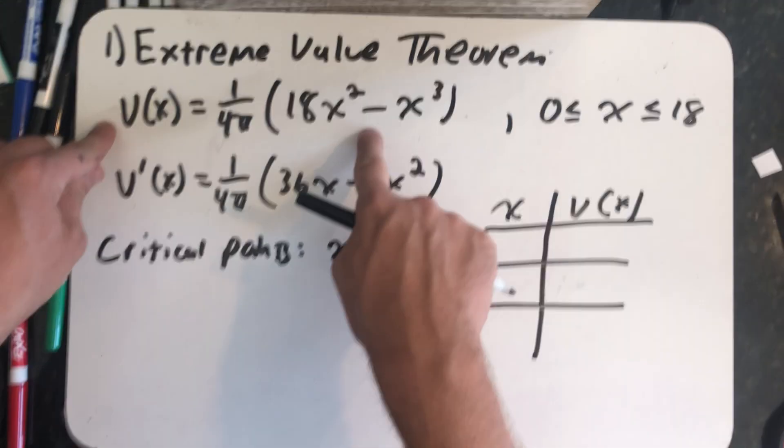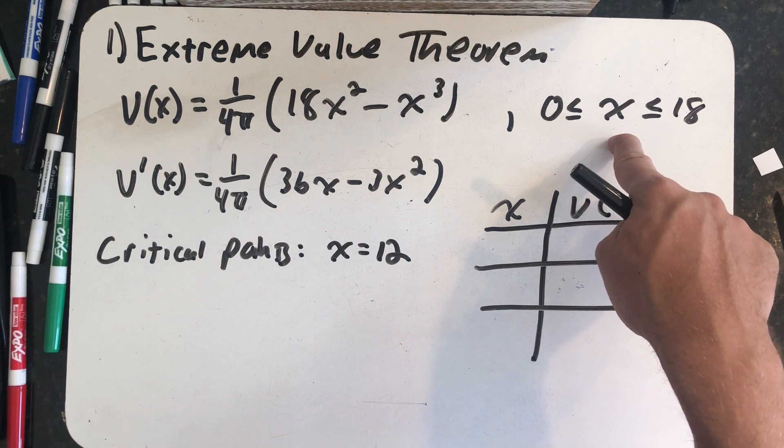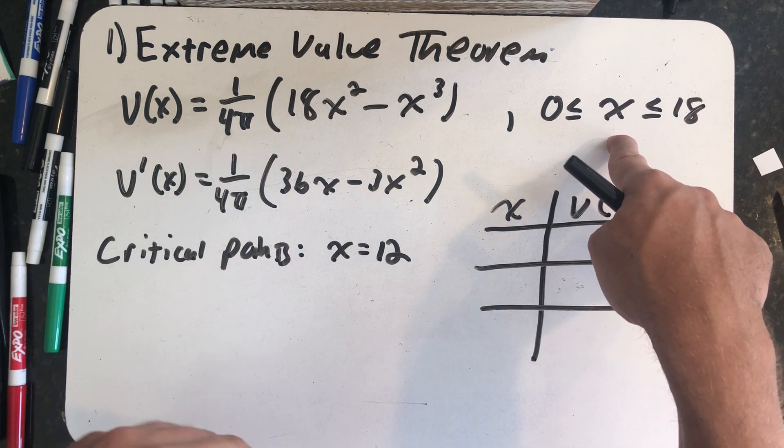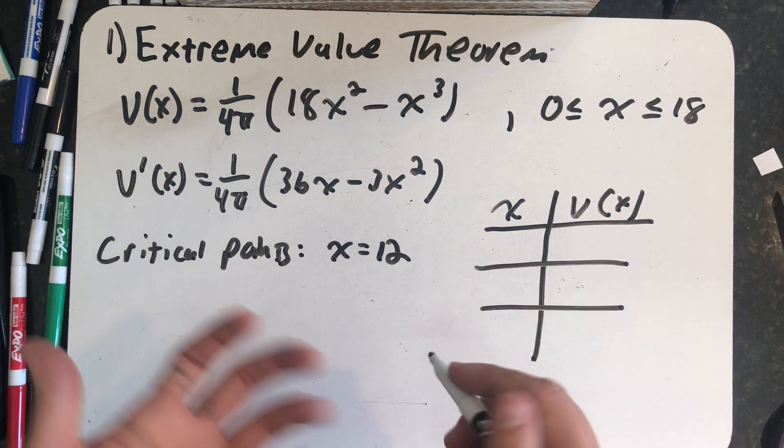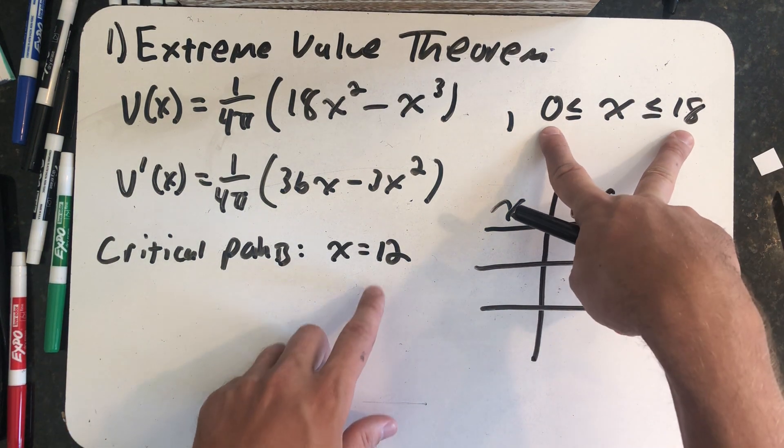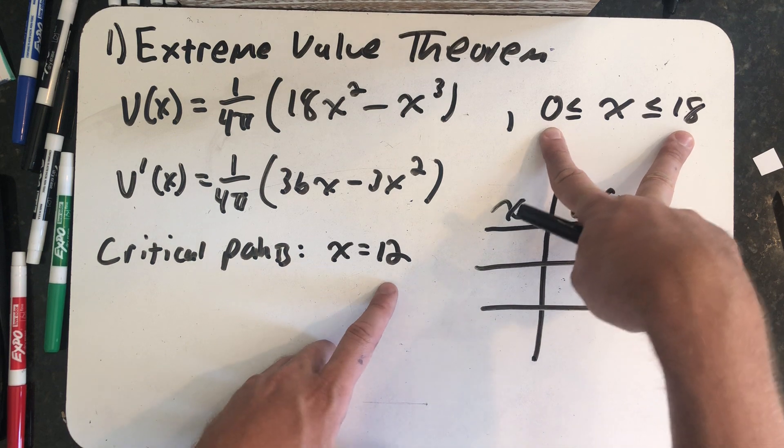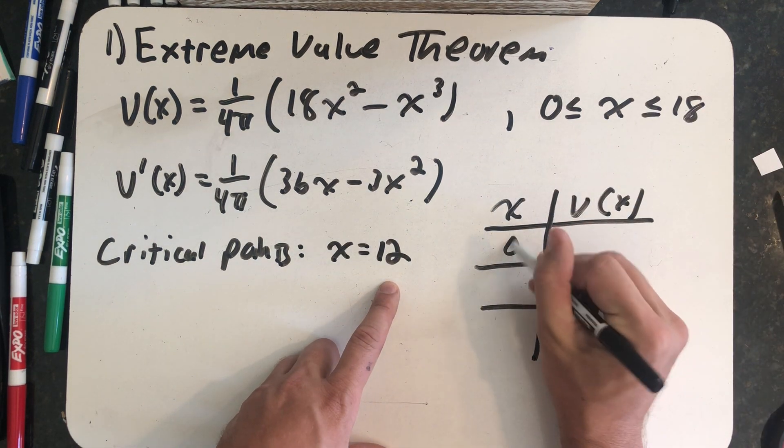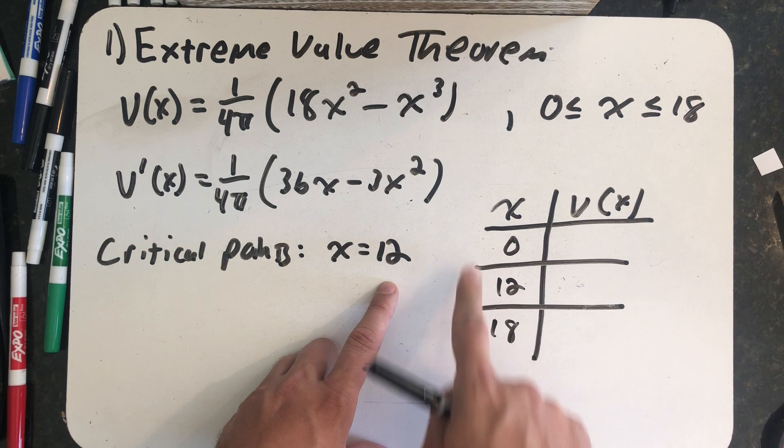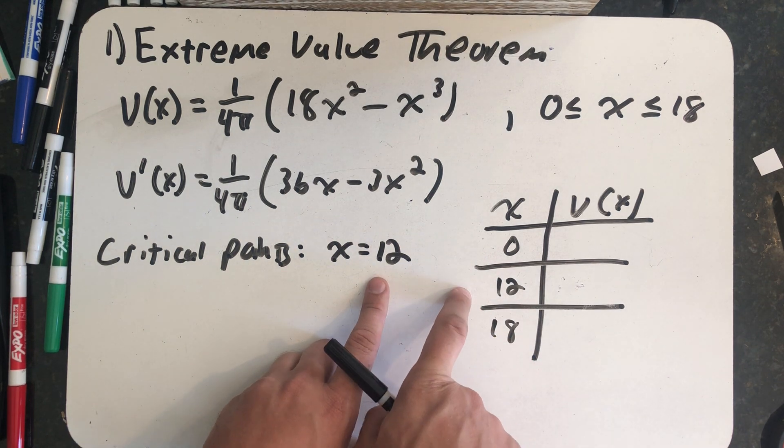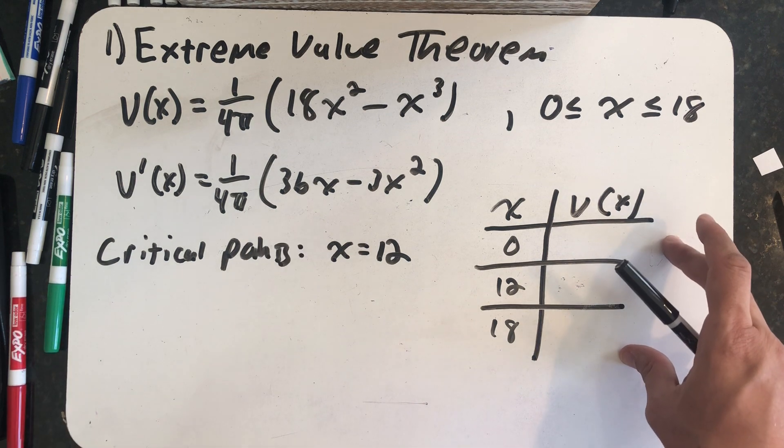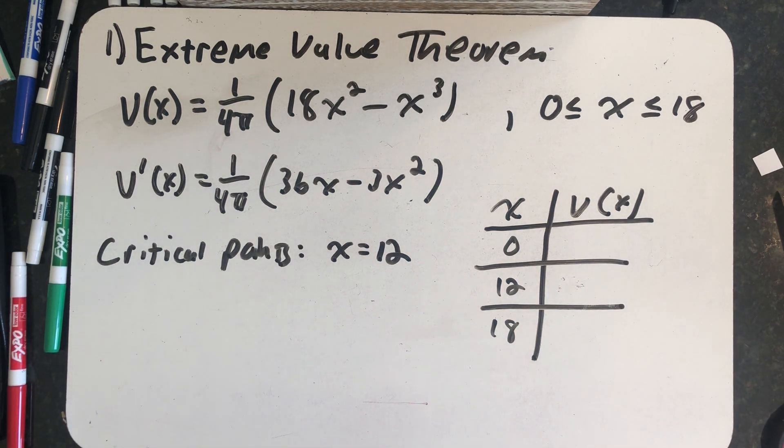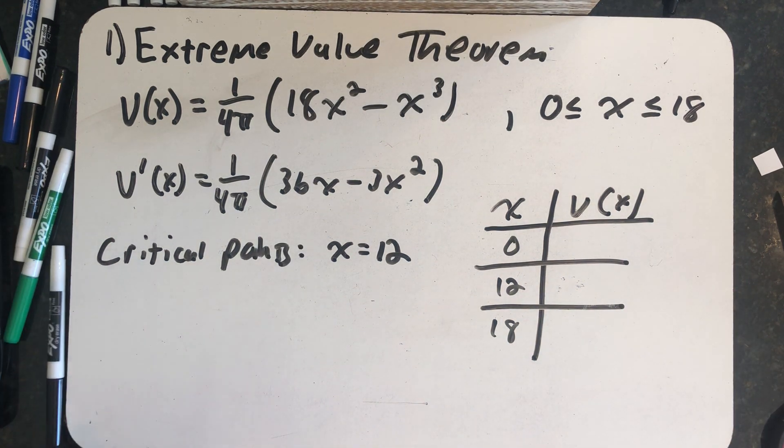Because I have a continuous function over a finite closed interval, I know the function has to have an absolute minimum and an absolute maximum. And that those values happen either at an endpoint or at a critical point in the domain. So I can just simply find the volume at both endpoints and this critical point. The largest thing in this table will be the absolute maximum that I'm looking for. And the smallest thing in the table will be the absolute minimum.